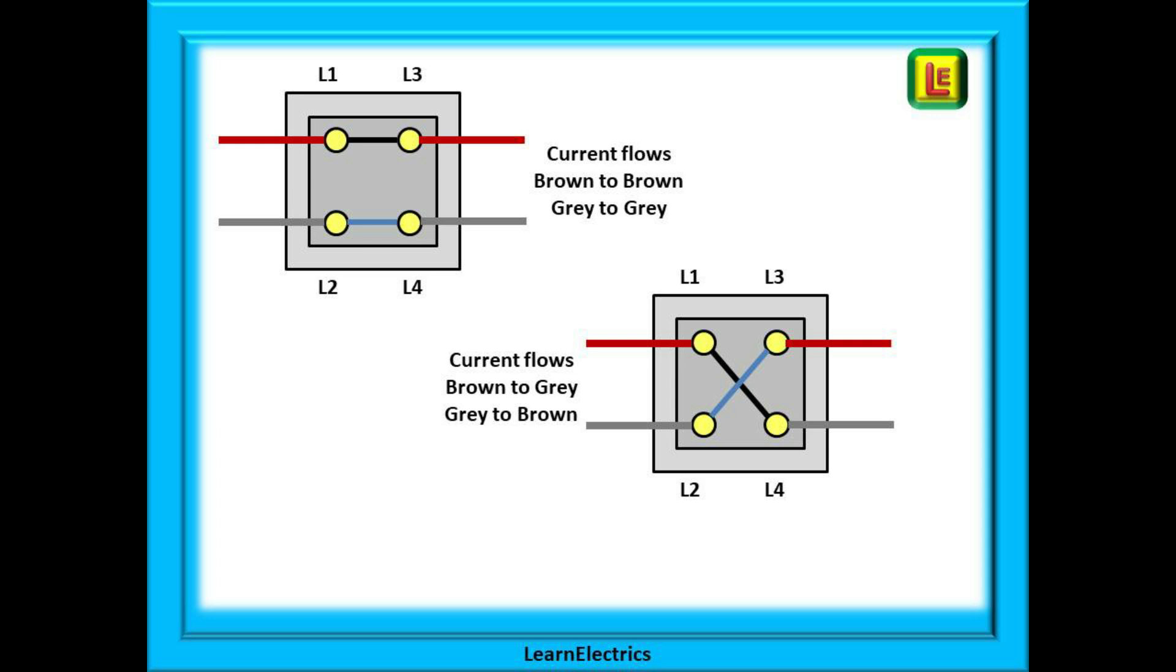Operating the switch causes the outputs to cross over. L1 now feeds L4 on the grey wire and L2 feeds the brown wire on L3.